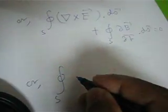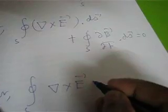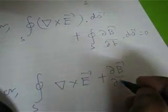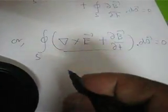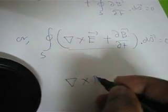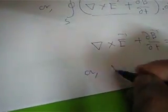So the surface integral of curl E plus del B by del t, dot dS, equals zero. Since this is a product of two functions equal to zero, but dS cannot be zero — if dS were zero, the surface integral would not exist — the term within the bracket must equal zero. For any arbitrary surface, we may write: curl of E plus del B by del t equals zero, or equivalently, curl of E equals minus del B by del t.